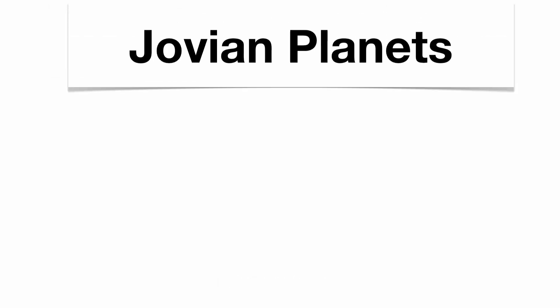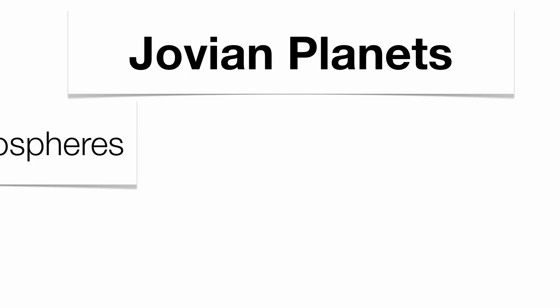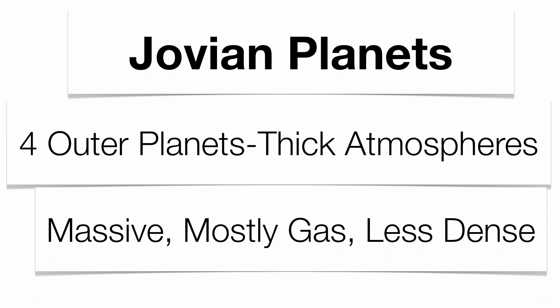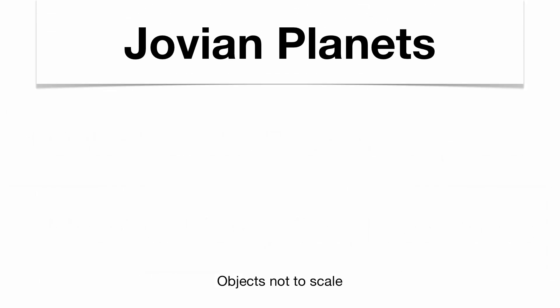Now the next grouping of planets are going to be the Jovian planets. These are the four outer planets. They tend to have much thicker atmospheres, they tend to be much more massive in nature, mostly gas with a little teeny tiny rocky core, and they tend to be less dense.